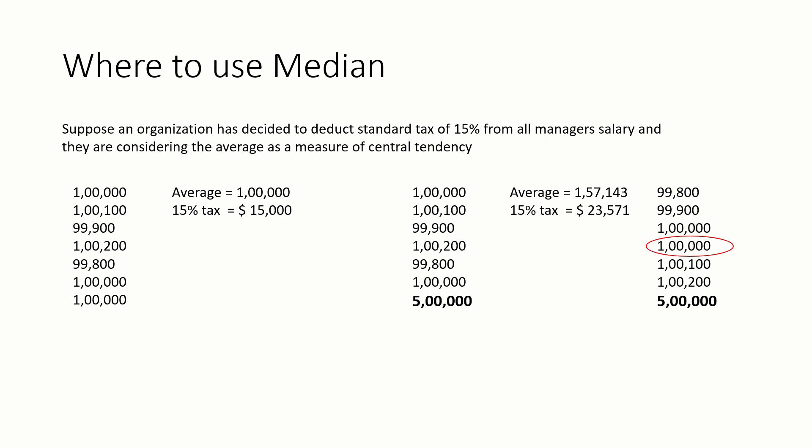Whenever you have any outlier in the data set, you should use median — that is the takeaway from this example. The outlier here is the 5 lakh entry typed instead of 1 lakh. The conditions are: data should be continuous for both mean and median; data should be normally distributed when we use mean, and non-normally distributed when we use median. In simple layman terms, when data has outliers we should use median, otherwise we can use mean.